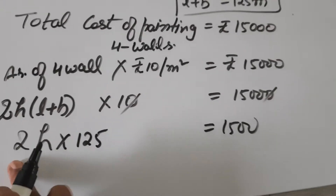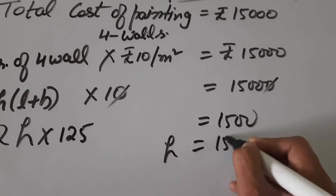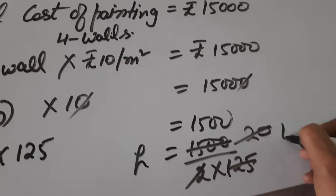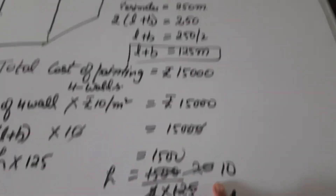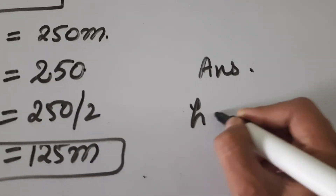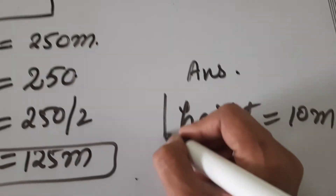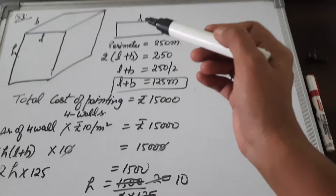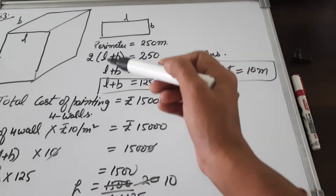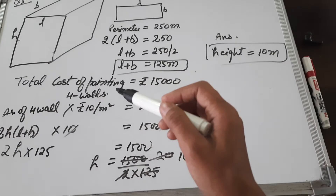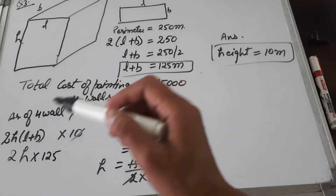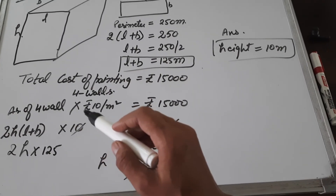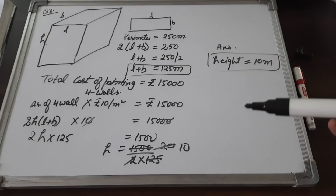By cross multiplying, take 2 and 125 to the other side. H equals 15,000 divided by (2 into 125), which is 1,500 divided by 250 — wait, 2 into 125 is 250, and 10 cancels, giving H equals 1,500 divided by 250, and the height of the hall is 6 meters. The answer is height of the hall equals 6 meters. Always start from the given things: perimeter gives L plus B, and total cost gives the equation to solve for height.